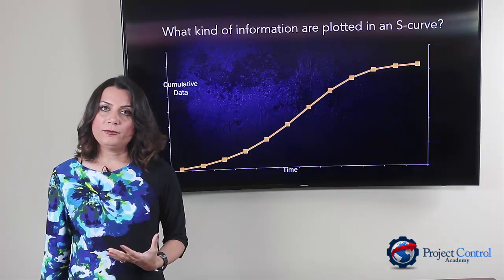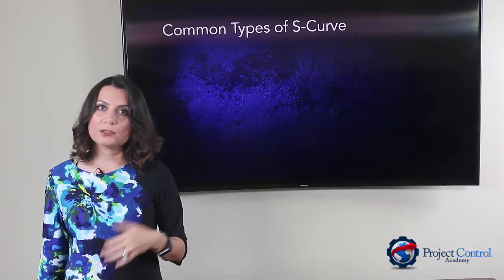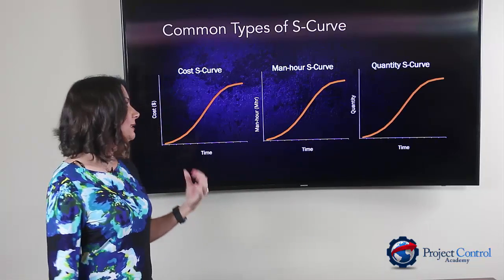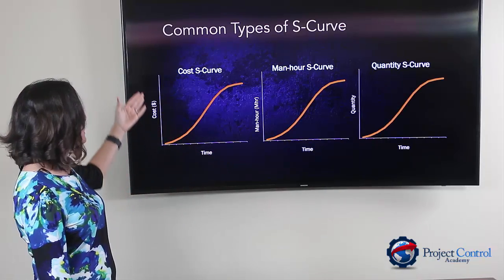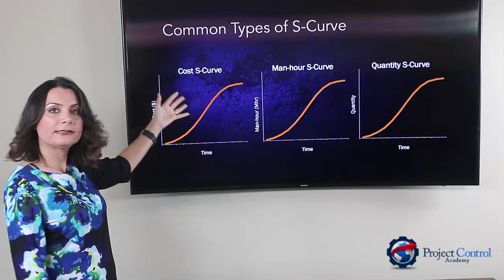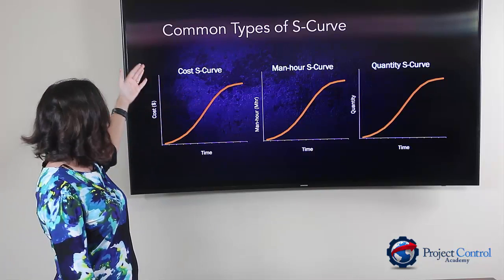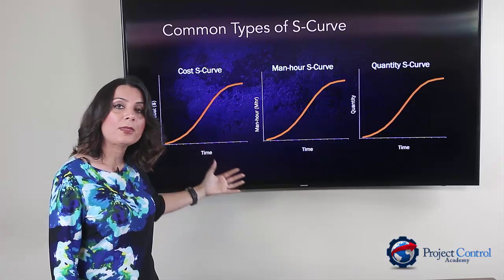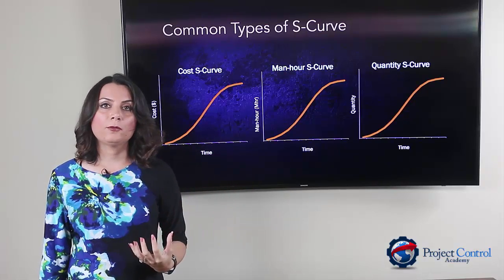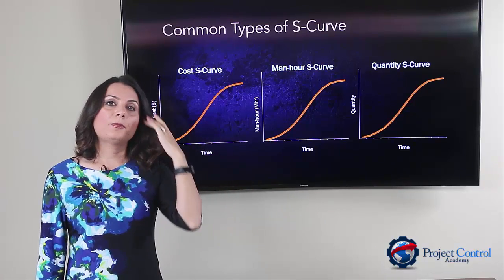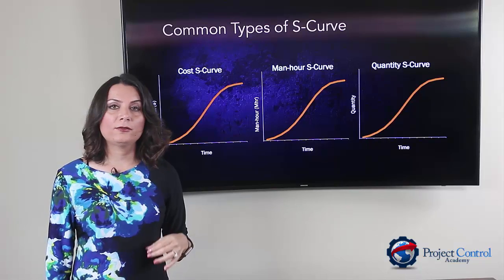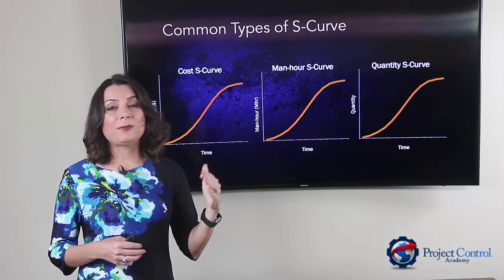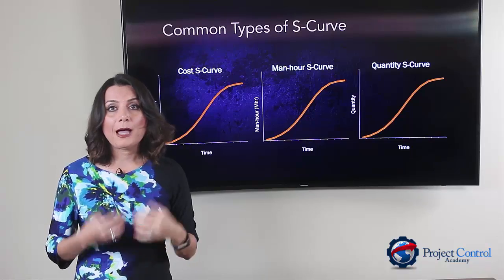Among all of those, the three most common types of S-curves you will see in projects are these three. You may see a cost S-curve, which is basically your cost versus time. This curve is very popular for cash flow curves, showing the spending of your budget over time.